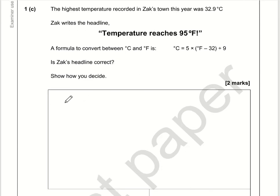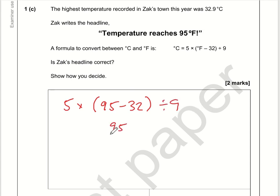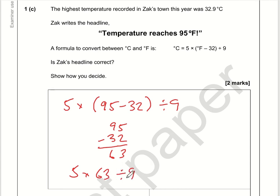For this question I'm going to use the formula, which is 5 lots of degrees in Fahrenheit, which is 95 take away 32, divided by 9. First of all, what is 95 take away 32? 5 take away 2 is 3, 9 minus 3 is 6, so it's 5 times 63 divided by 9. Using BIDMAS, we'll do the division first. 63 divided by 9 is 7, so we've got 5 times 7, which is 35 degrees.